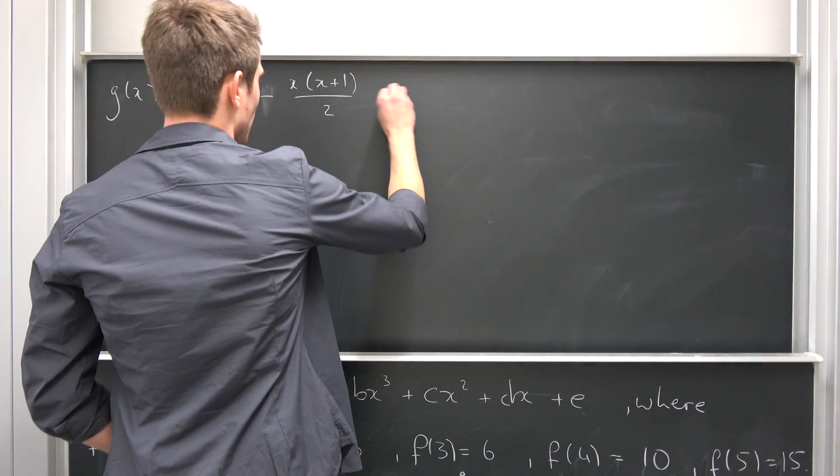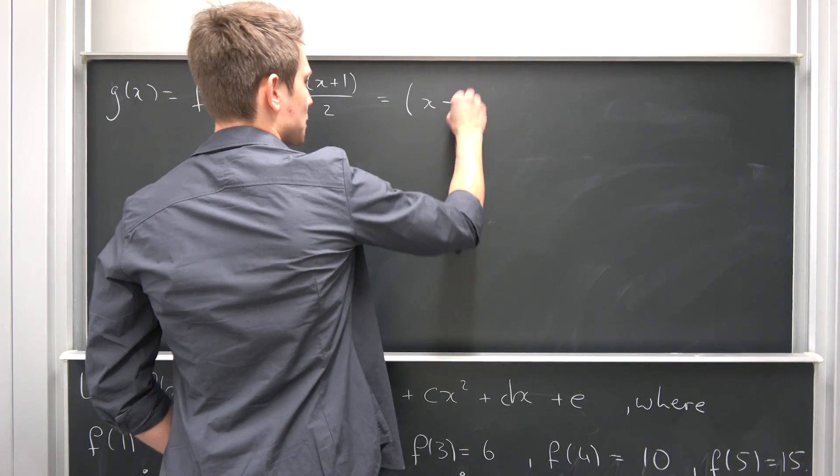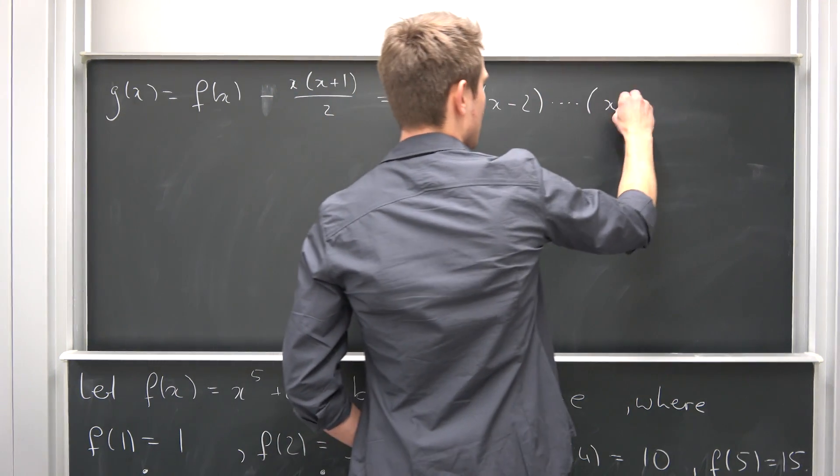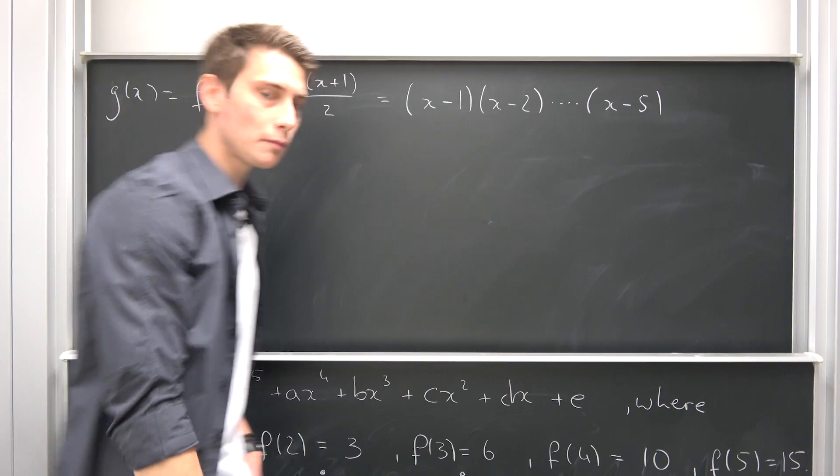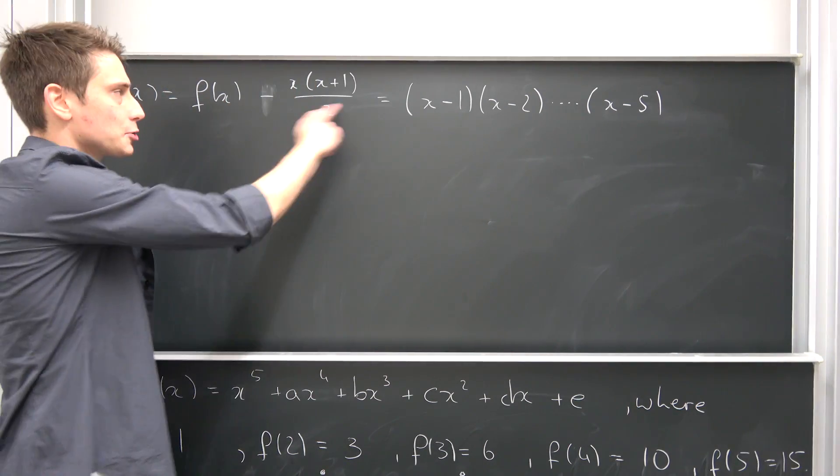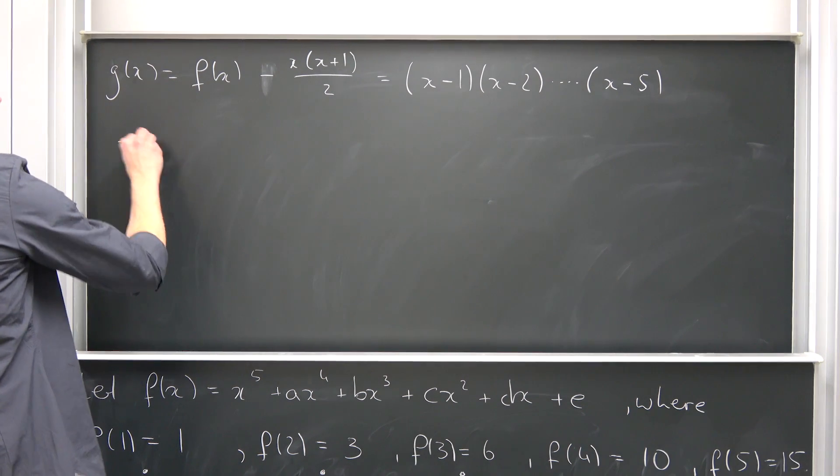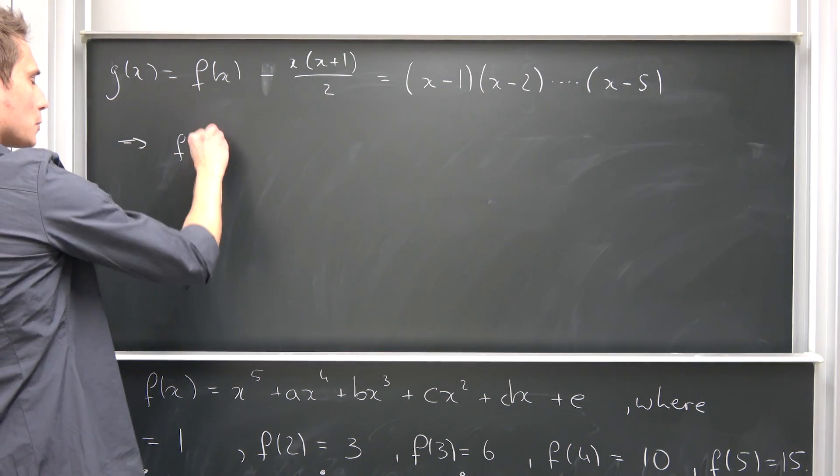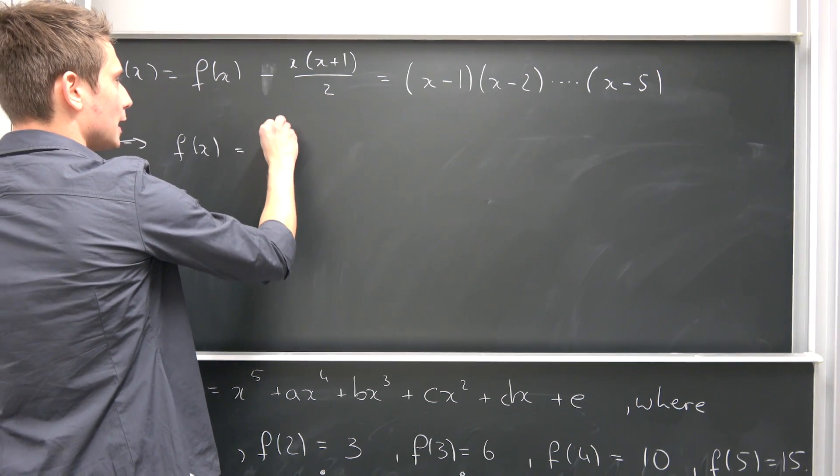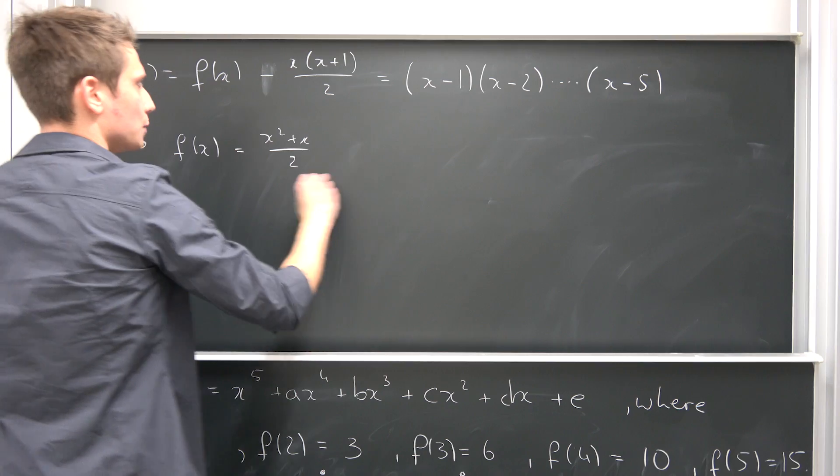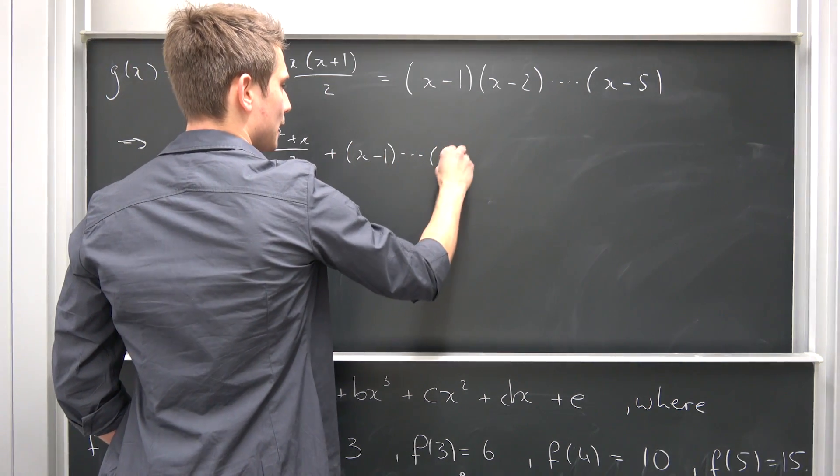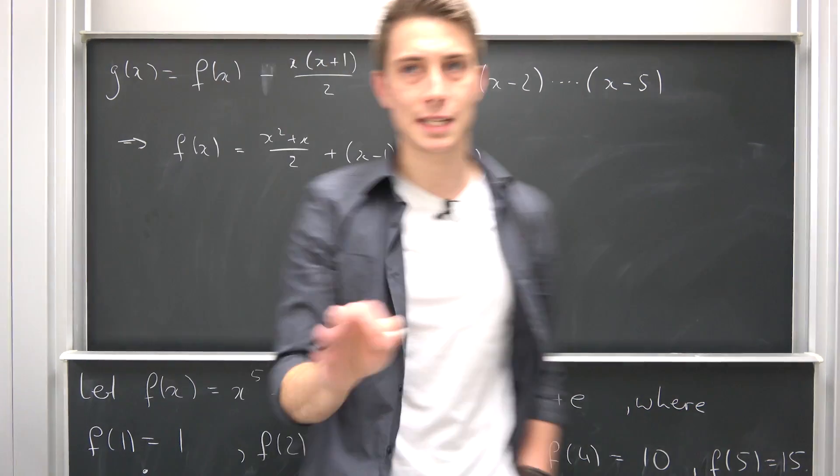Just simple algebra, meaning we have x minus the first root times x minus the second root dot dot dot until x minus the last root. And this is actually really cool because now we can just add this term on both sides so that we can get f of x being nothing but, well, x squared plus x over 2 plus x minus 1 dot dot dot x minus 5. It's as easy as it is.